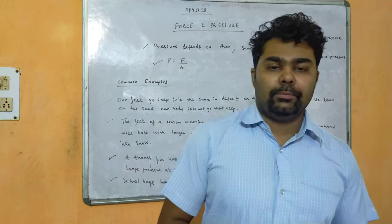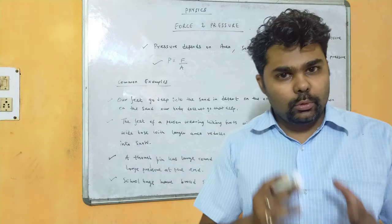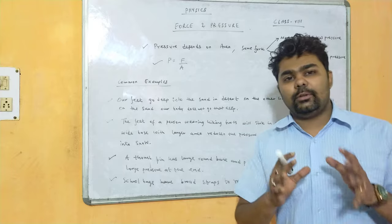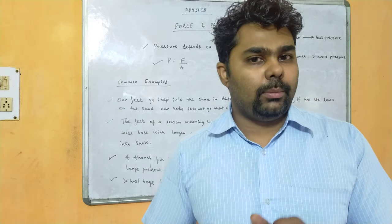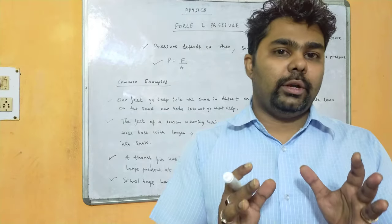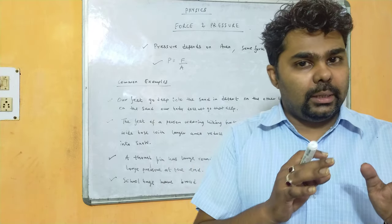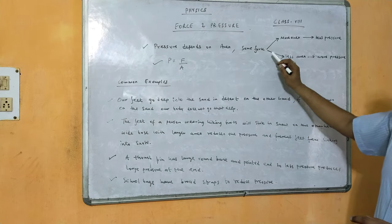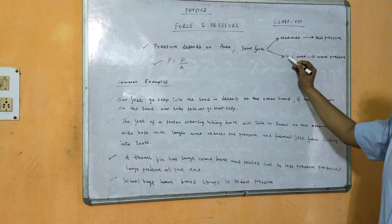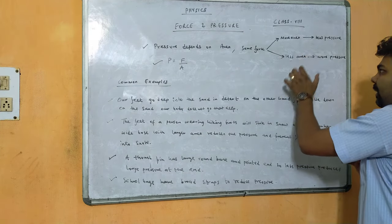Pressure depends on two factors: force and area. If we apply more force, a larger pressure is produced. Pressure and area are inversely proportional to each other — if area increases, pressure decreases, and if pressure increases, area decreases. With the same force, a larger area produces less pressure, while a smaller area exerts more pressure.